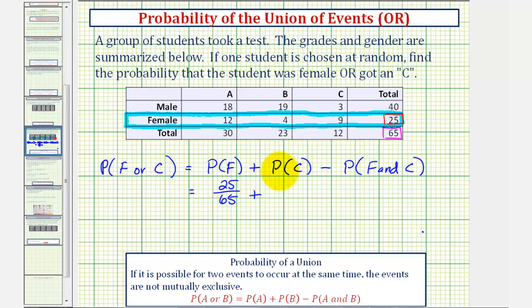Now we want the probability that a student selected at random would have a C on the test. That information is given in this column. Notice how 12 of the students received a C, and therefore the probability of selecting a student that received a C would be 12/65.